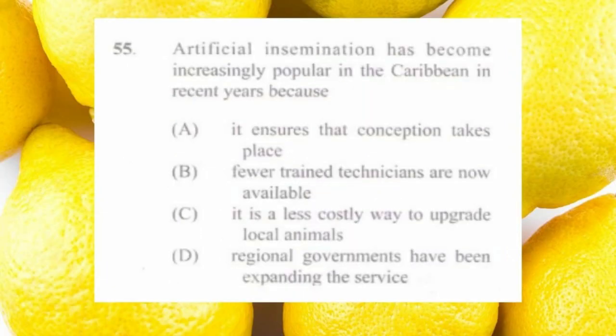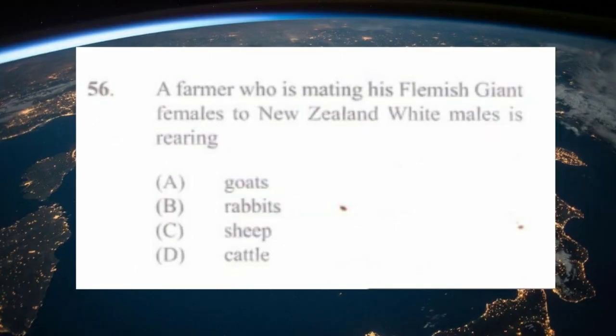Question number fifty-five: artificial insemination has become increasingly popular in the Caribbean in recent years because a) it ensures conception takes place, b) fewer trained technicians are available, c) it is a less costly way to upgrade local animals, d) regional governments have been expanding the service. The answer is c) it is a less costly way to upgrade local animals.